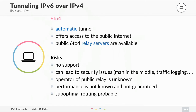The relay server might have only 10 megabits or it might have 10 gig — nobody knows. And suboptimal routing is not only possible, it's probable, because you don't know where the relay server is. You might send traffic from the US to Europe just to be encapsulated to IPv6 and then sent back to the US. Doesn't make sense.